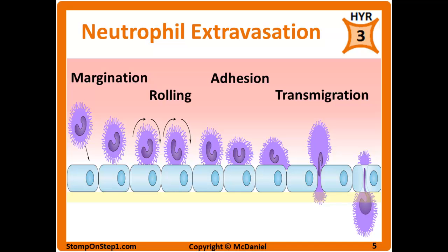The next step is adhesion. Additional cytokines cause the expression of CAMs (cellular adhesion molecules) on the surface of endothelial cells, as well as integrins on the surface of the neutrophil. This interaction is much tighter than the rolling interaction, so rather than rolling, the neutrophil actually stops in one place on the vessel wall. Once the neutrophil is stuck firmly in one spot, it moves on to transmigration.